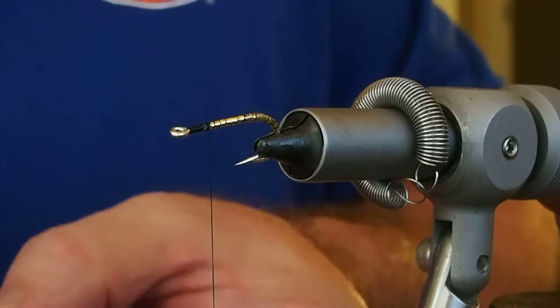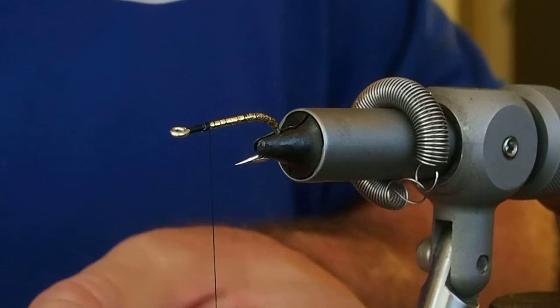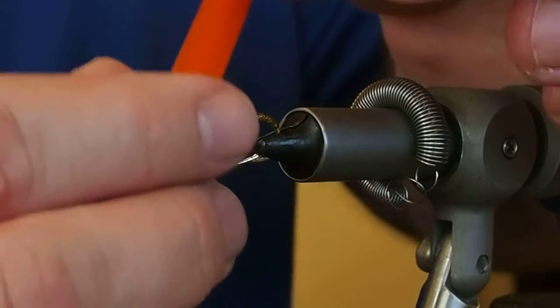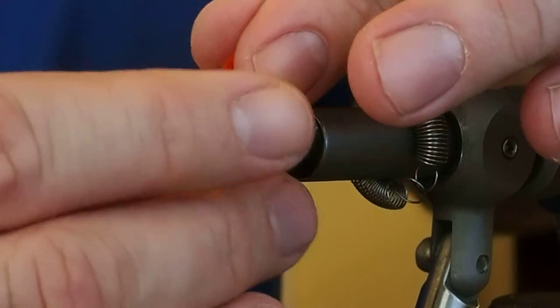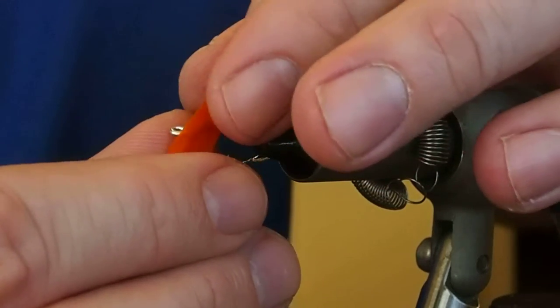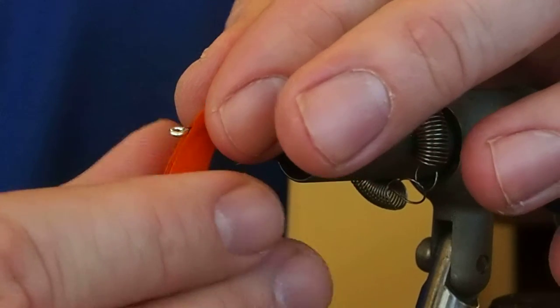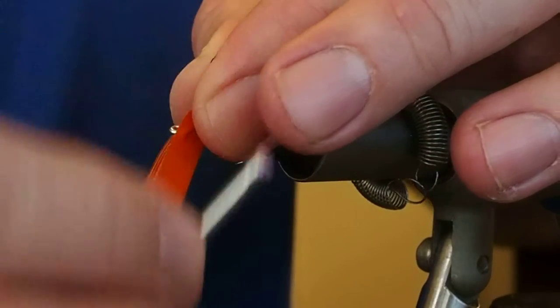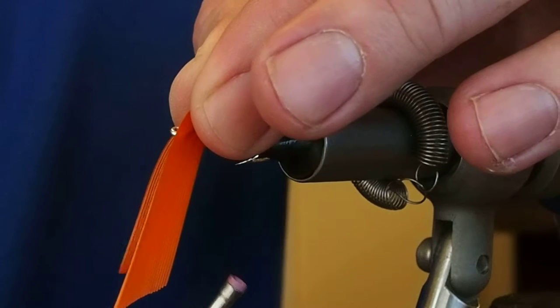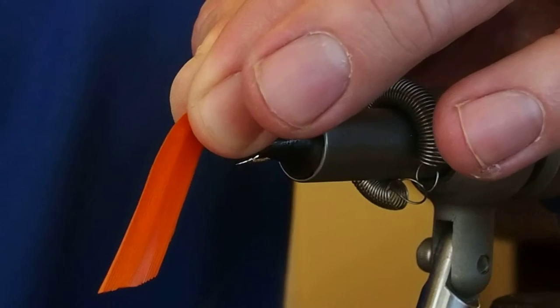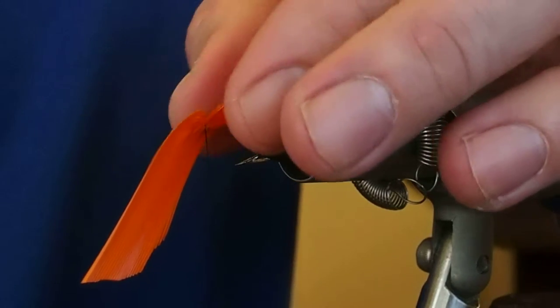So line up my tips and then I'm going to place a section of that feather on either side of the shank. Now I essentially just want to pinch wrap. And while lifting, kind of lifting the wing, just pull that thread straight down just to capture your wing.